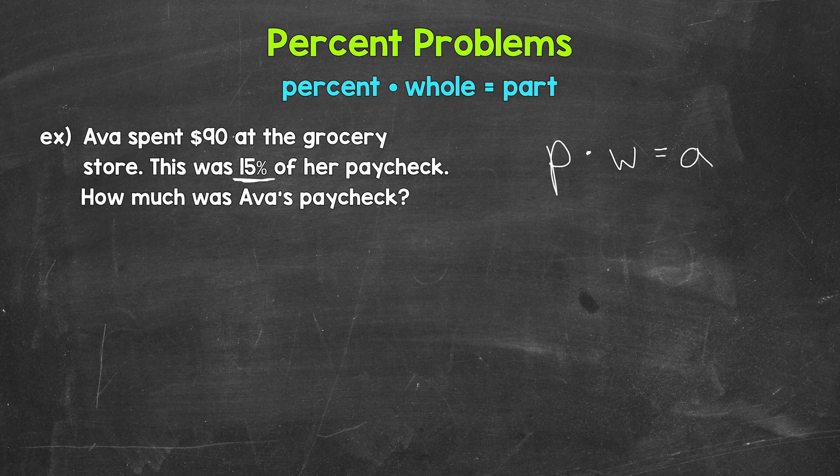And when we plug in the percent, we're going to use the decimal form. That makes the percent easier to work with within the equation. And remember, all we need to do to convert a percent to a decimal is divide by 100. And we can quickly divide by 100 by moving the decimal twice to the left.